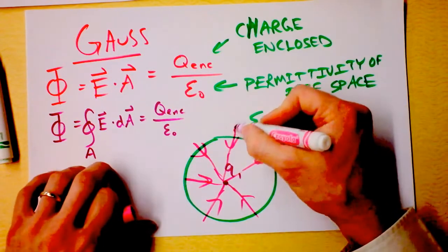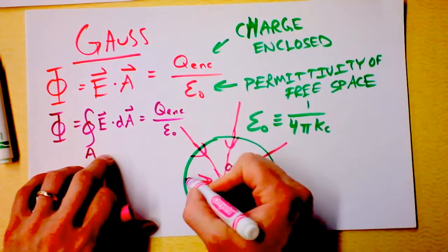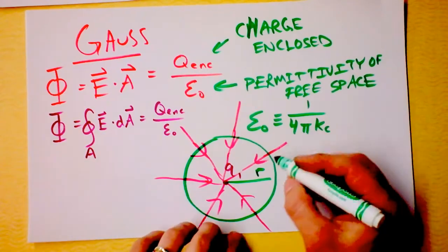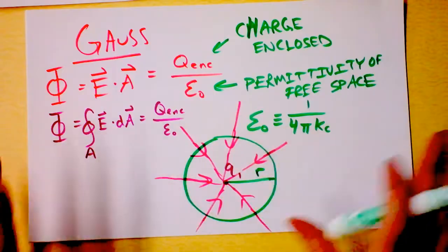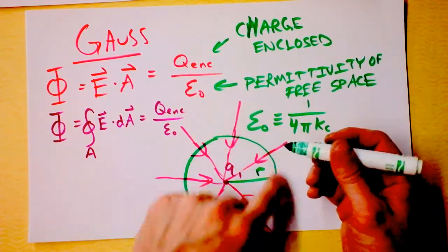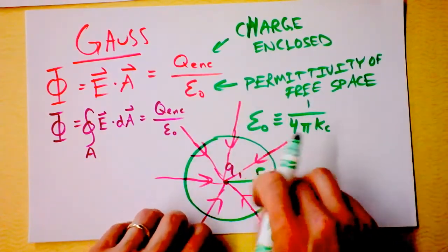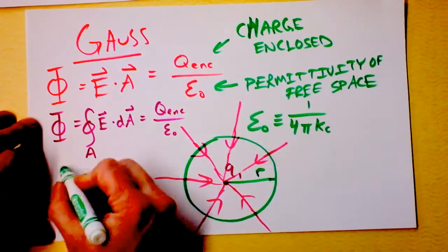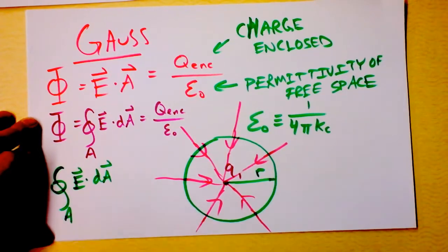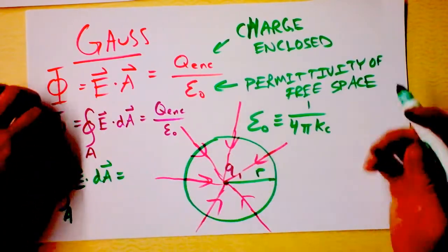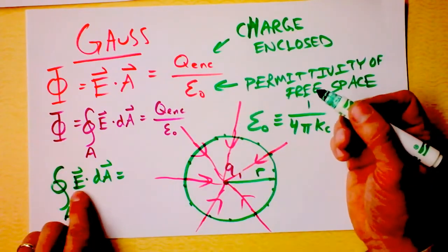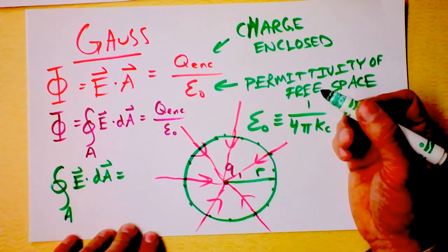There's some radius of our Gaussian surface, and we're going to get the electric field at a distance r from the charge. Do you expect a strong electric field near the charge or far from it? Near — yes. So the electric field at the location of the sphere depends on the distance from the center charge. We integrate the electric field dotted into area over the entire surface. Since we chose spherical symmetry, the electric field is the same magnitude everywhere on the sphere, so we can pull E out of the integral.